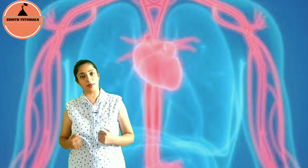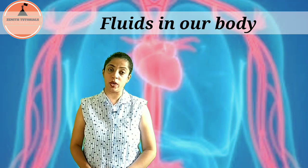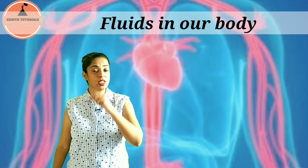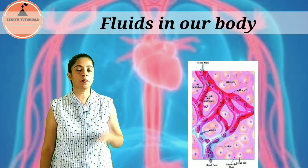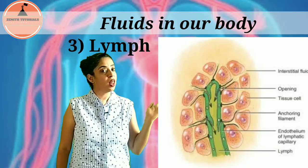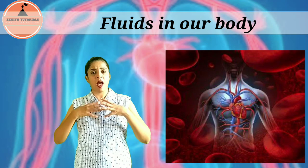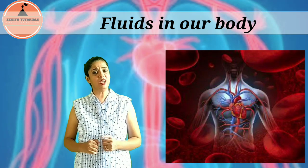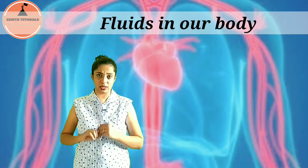So these four points — digestive, respiratory, excretory, and endocrine systems — you should remember as the need for transport in our body. Now, there are three basic fluids in our body: first, blood; second, tissue fluid; and third, lymph. Blood is contained in the heart and the blood vessels, namely arteries, veins, and capillaries.